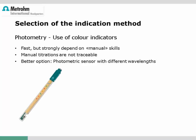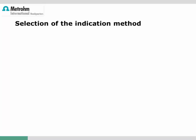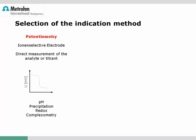Therefore, the better option is to use a photometric sensor like the optrode. Various wavelengths are available in one sensor to cover all kinds of color indicators. The big advantage is that the color change is converted into an electrical signal that can be recorded and evaluated by the titrator — much more reproducible, reliable, and traceable than any manual titration. The only limitation is precipitation during titration, which reduces the measuring signal, so photometric indication is replaced with potentiometric methods whenever possible.